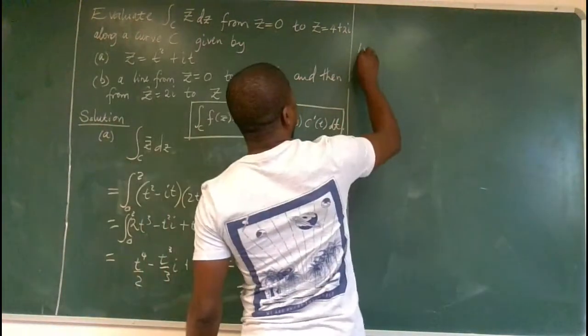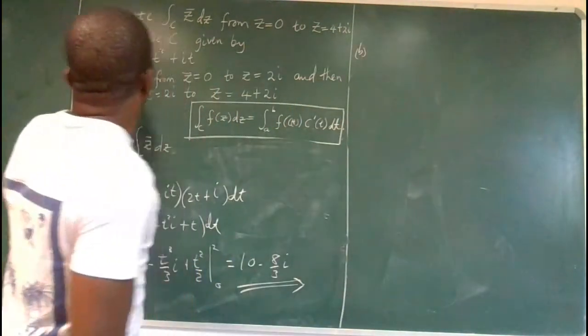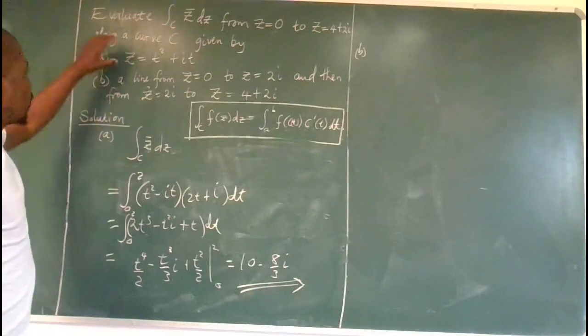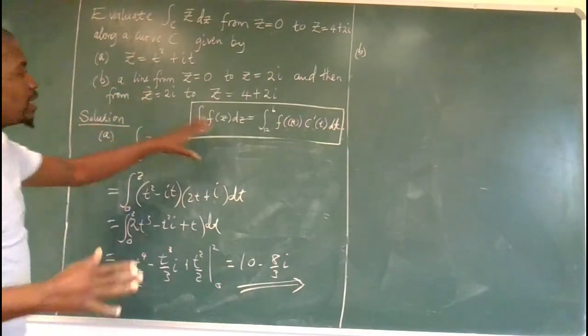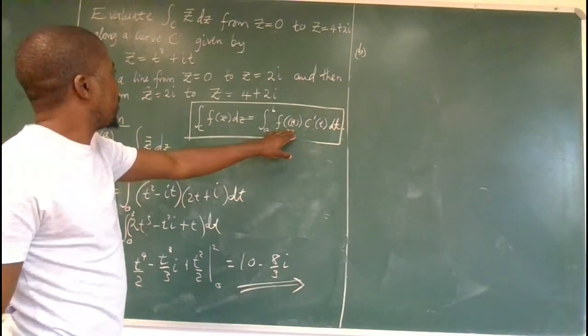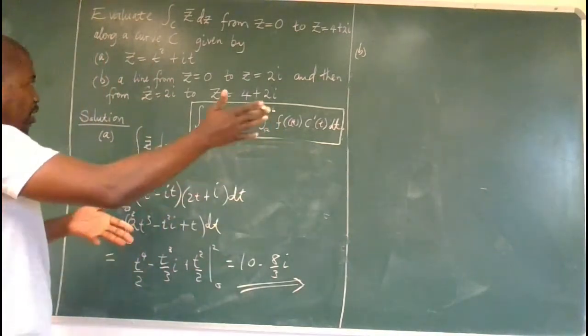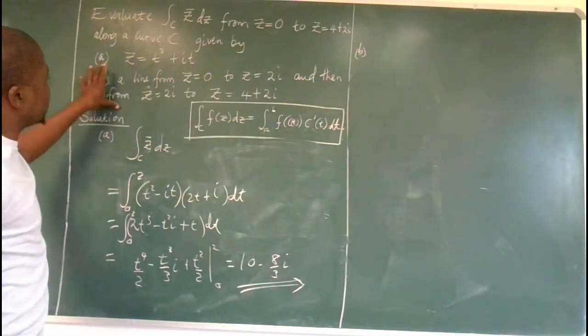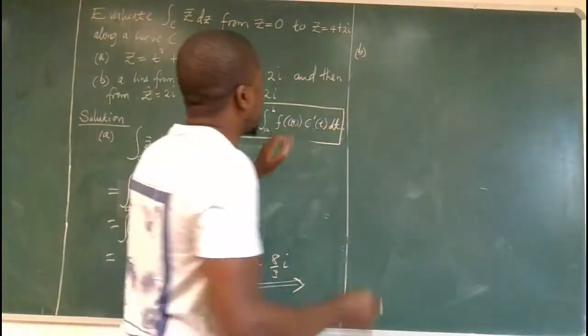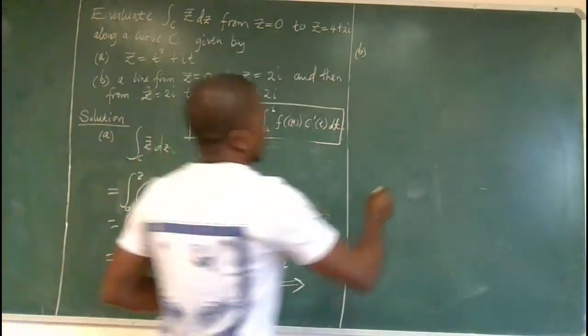Let's do part B, please. So for part B, we need to find c(t), right? The parameterized path. So in this part B, we need to work out c(t). But it's in pieces. Okay, look at this.